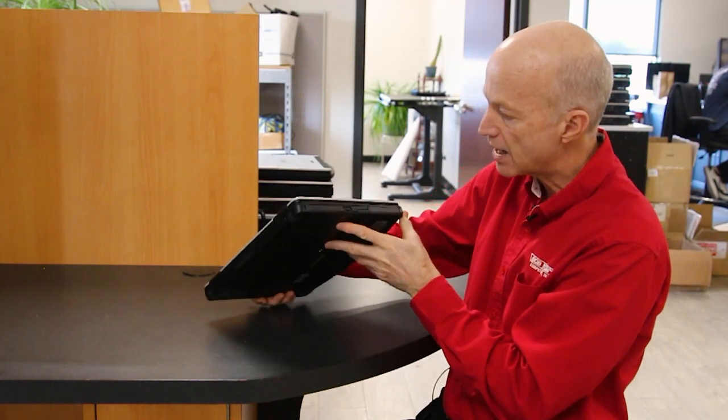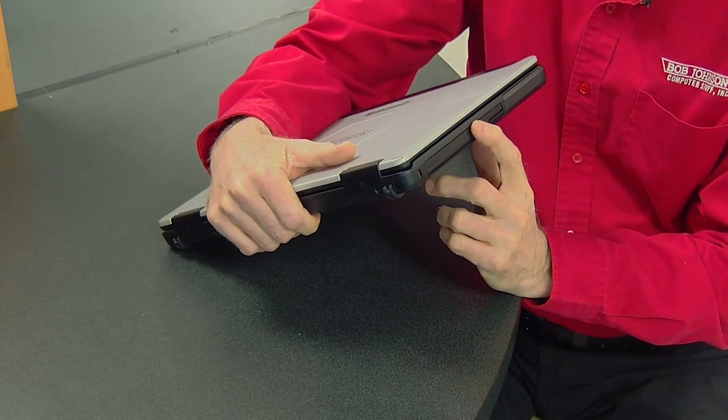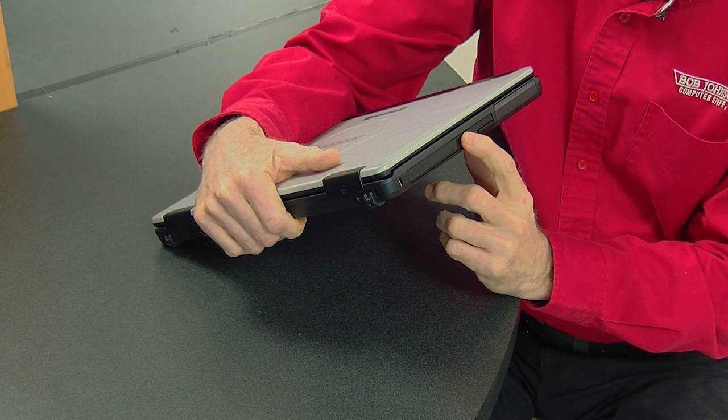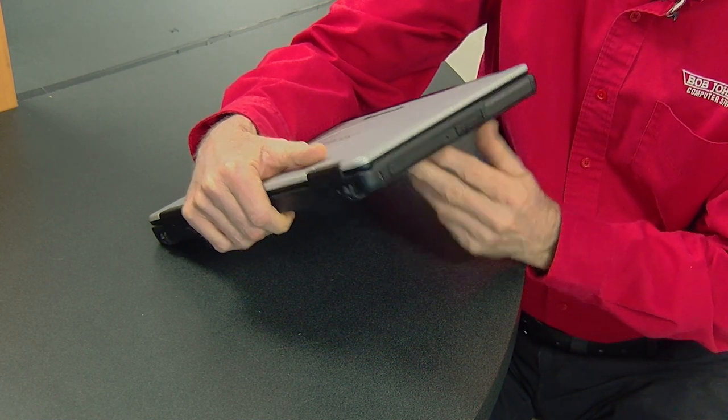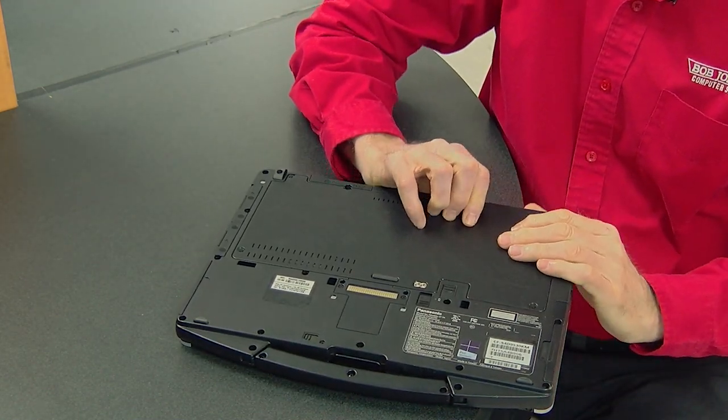On this other side, you have your CD-ROM drive. Or sometimes you may have a secondary battery in there. This is just another port that allows you to upgrade. And it usually is easy to remove.